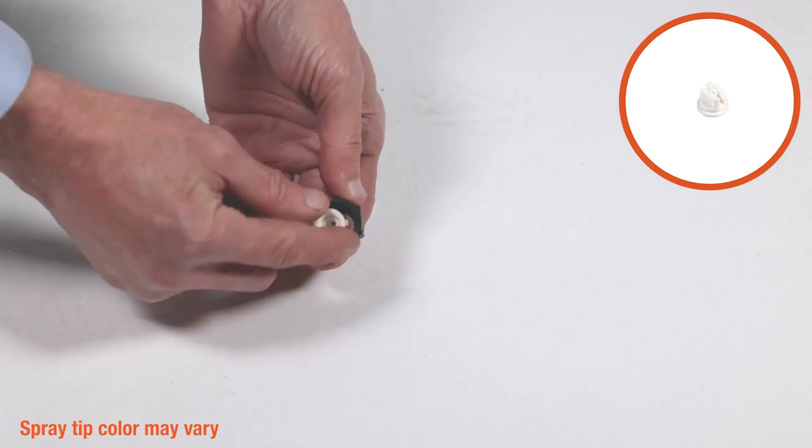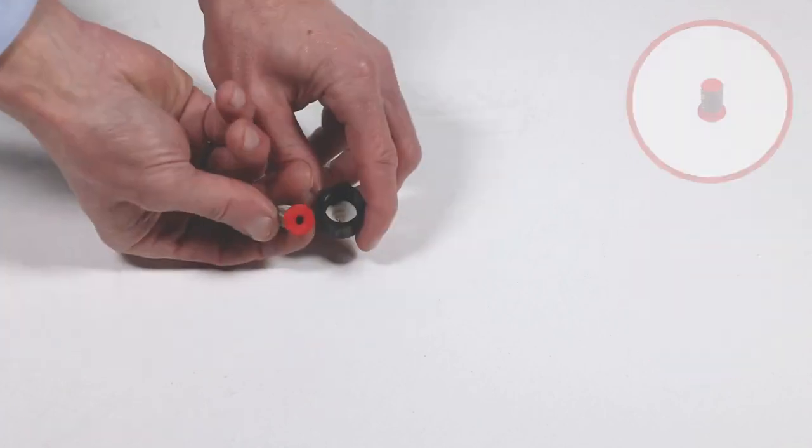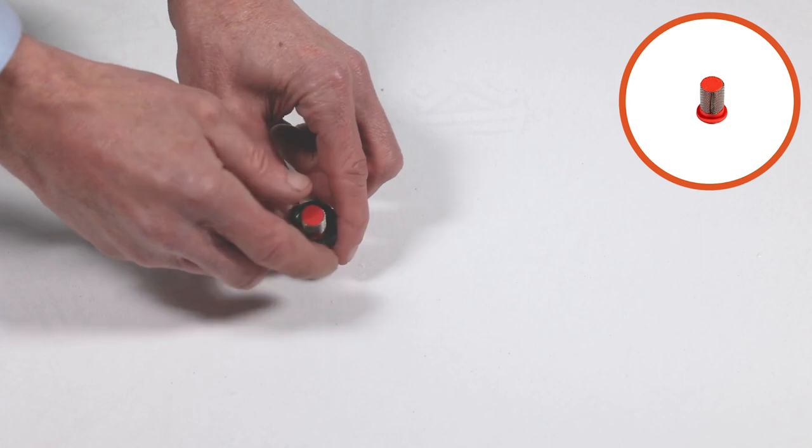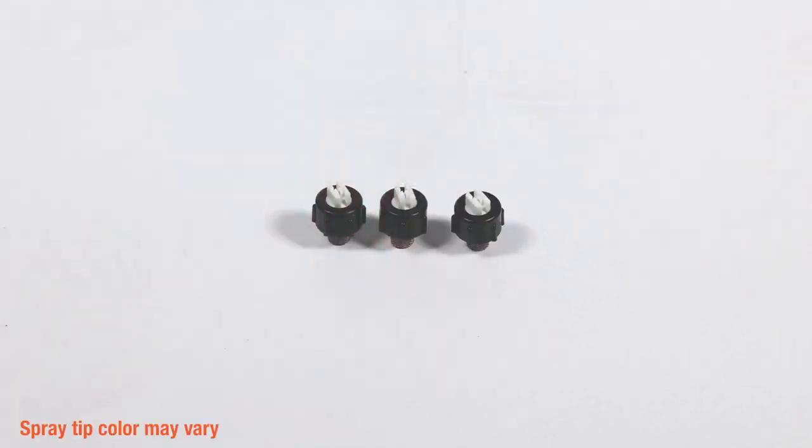Next, insert a spray tip, Part K, into a cap nut, Part H, followed by a spray tip screen, Part I. Repeat to create a total of 3 spray tip assemblies.